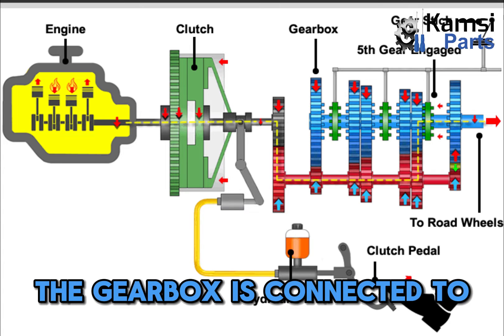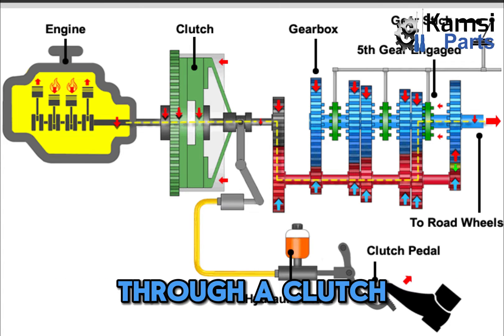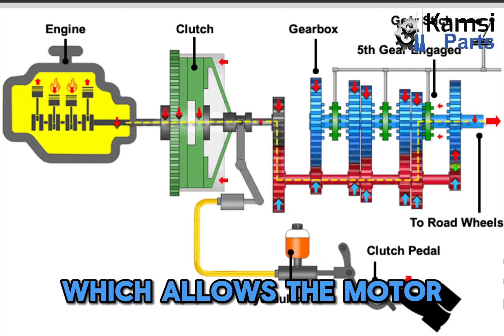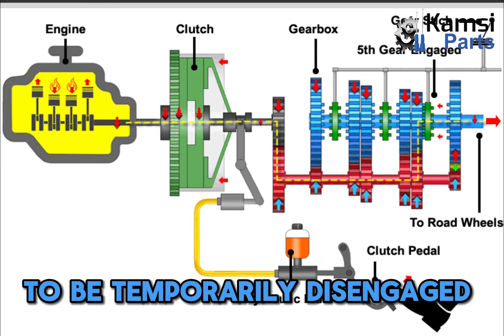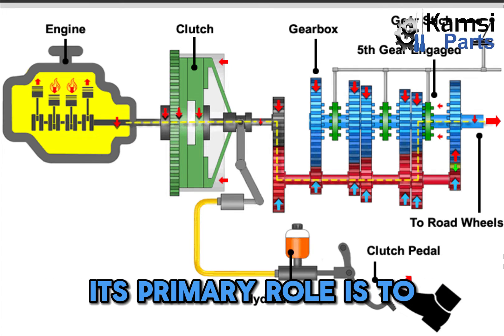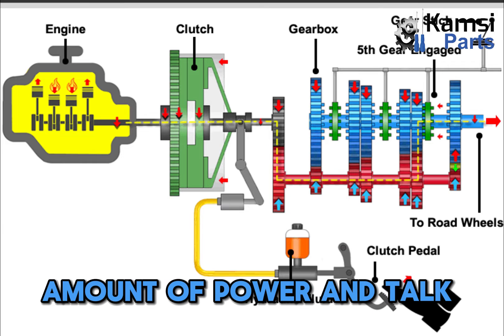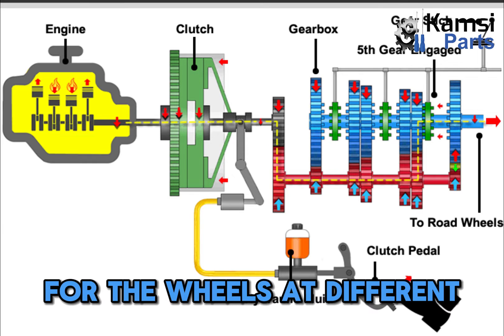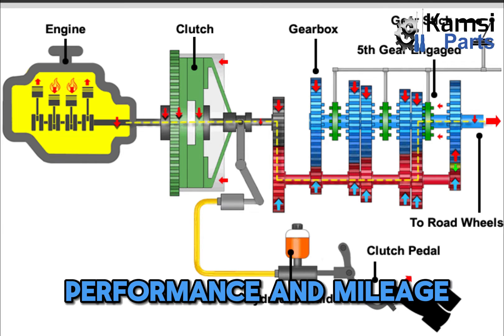The gearbox is connected to the engine's crankshaft through a clutch, which allows the motor and gearbox to be temporarily disengaged when changing gears. Its primary role is to churn out the right amount of power and torque for the wheels at different speeds to achieve optimal performance and mileage.